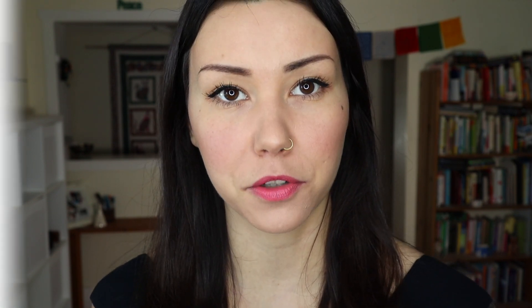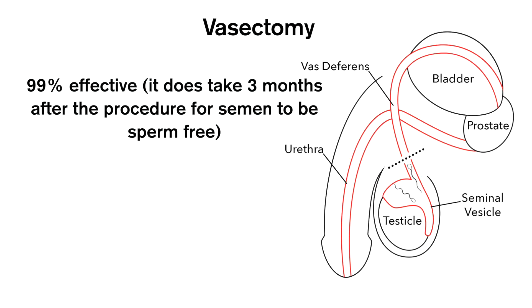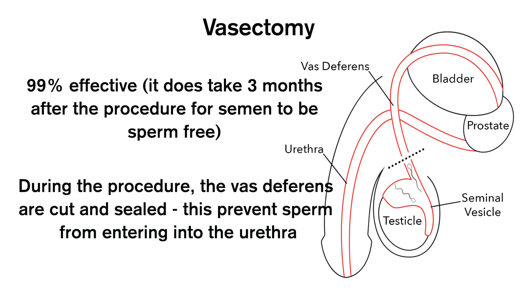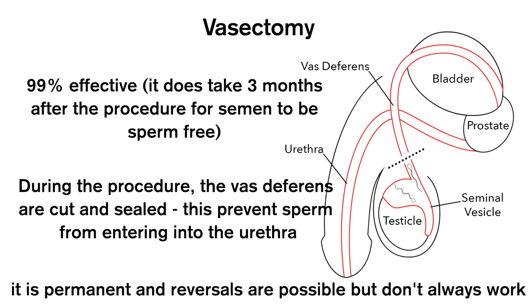The last form of birth control is vasectomy, which is the male equivalent of tubal ligation. It involves the cutting, clipping, and cauterization of the vas deferens tubes, which carry sperm from the testicles to the penis. Unlike tubal ligation, vasectomy is not actually surgery — it's done in a doctor's office with local anesthetic. Vasectomy is highly effective, long-term contraception. Reversals can be attempted, but like tubal ligation, sometimes they're not successful. Vasectomy is really for people who are very sure they are not going to have children.